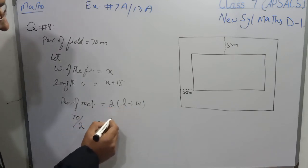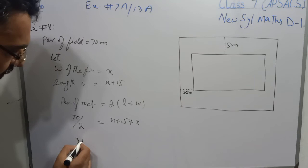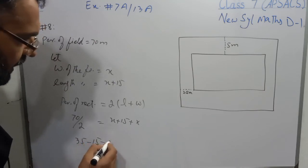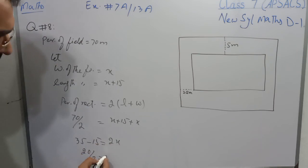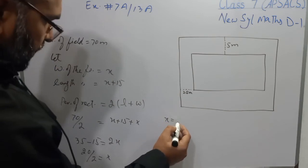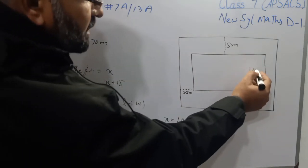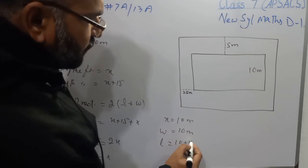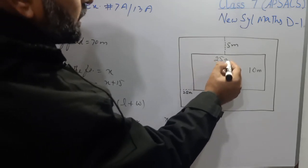Transferring the 2 to divide: 70 divided by 2 is 35, and length is x plus 15, width is x. Subtracting 15 from 35 gives 20, and x plus x is 2x. So 2x equals 20, meaning x equals 10 meters. Therefore, width of this rectangle is 10 meters, and length is 10 plus 15, which is 25 meters.